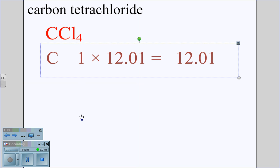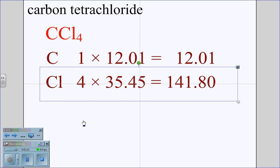In this case, I have one carbon atom. Carbon's AMU is 12.01, and four chlorine atoms, its AMU is 35.45.